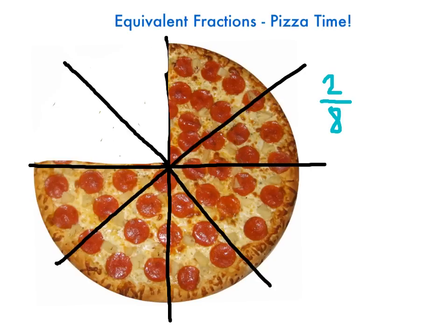So she ate two out of eight slices, which means how many are left over? Let's go back and count — one, two, three, four, five, six. So six out of eight are left over. From the same problem we can pull two different types of information: she ate two eighths of my pizza, or there's six eighths of the pizza left over.